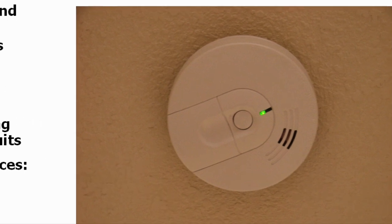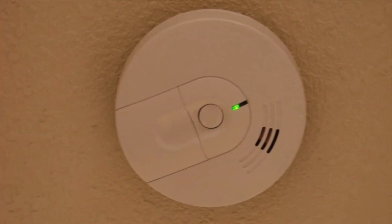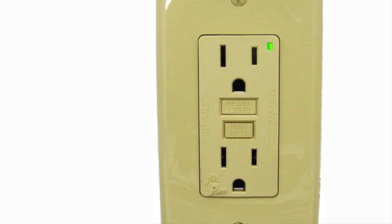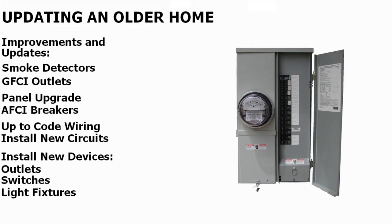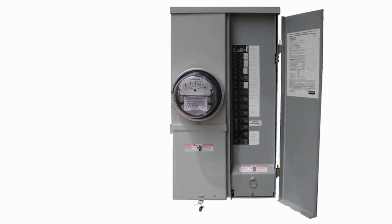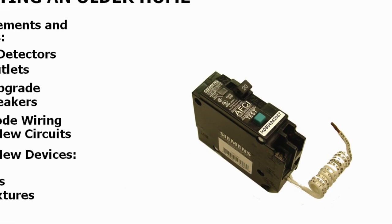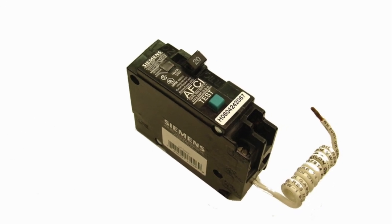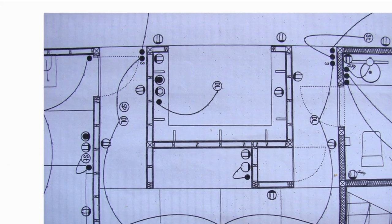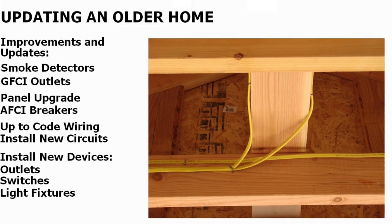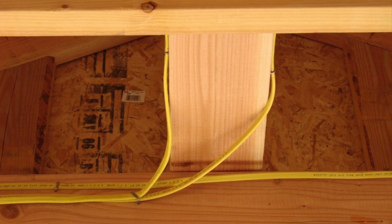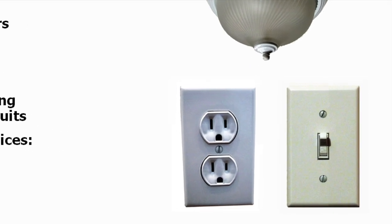We address what should be done about outdated wiring and where to start updating a home. A great starting point is installing smoke detectors and GFCI outlets to protect the home, then upgrading the panel and installing AFCI circuit breakers to protect the wiring. Then a plan for updating the home: installing new wiring, new outlets, new light switches, and new fixtures.